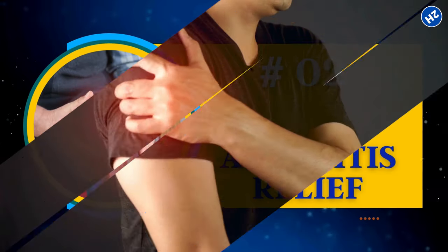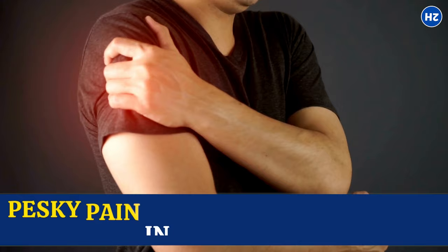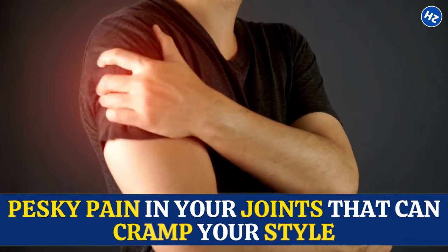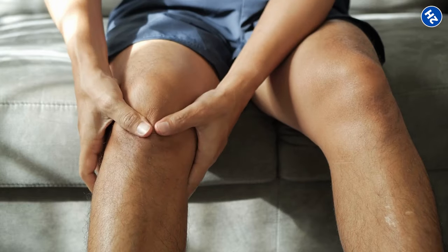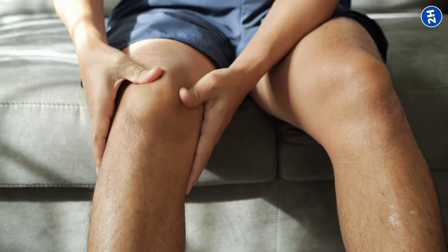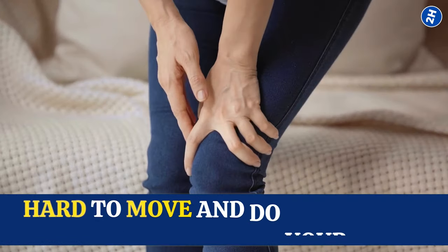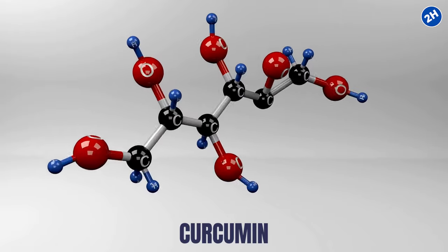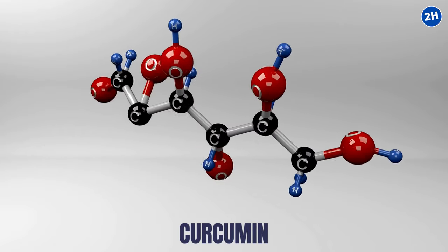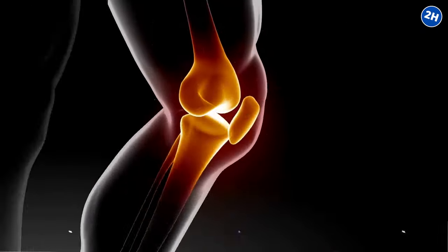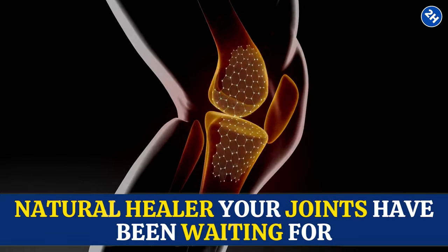Number 2. Arthritis Relief. Now let's talk about arthritis, that pesky pain in your joints that can cramp your style. Arthritis happens when your joints get all swollen and achy, making it hard to move and do your usual daily activities. Curcumin, our turmeric superstar, swoops in to save the day. It's like the natural healer your joints have been waiting for.